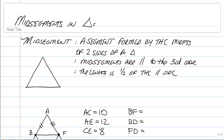Now, mid-segment does a couple things. A mid-segment is first formed by the mid-points of two sides of a triangle. So, we can take those two sides, and that is a mid-segment.